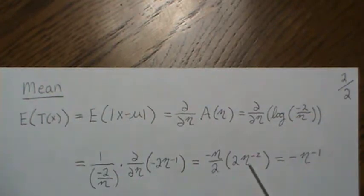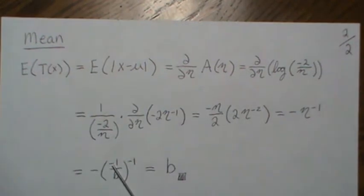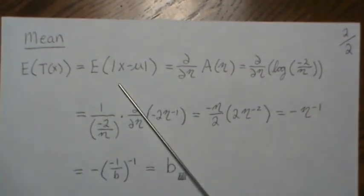The 2s cancel, and we can combine these etas into this. So it's minus eta to the minus 1. We stick in what we know about eta, which was minus 1 over b. So then this becomes just b, and that's the mean of our sufficient statistic.